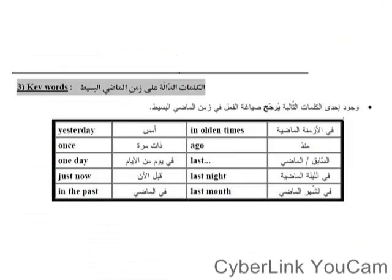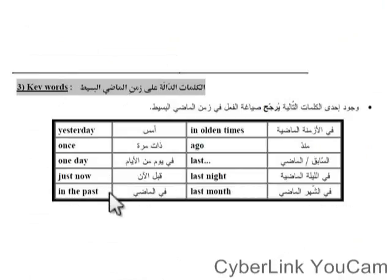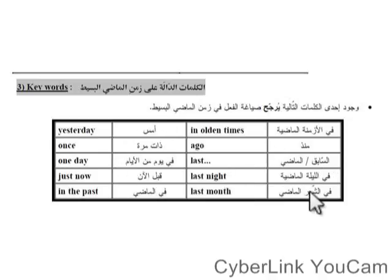عندنا حاجة اسمها الـ keywords — الكلمات اللي هتدل على الزمن وأعرف منها الزمن. لما يجيلي في الجملة: yesterday, once, one day, just now, in the past, in olden times, ago, last, last night, last month — لو لاقيت أي كلمة من دول في الجملة، طول الوقت ده past simple tense — زمن الماضي البسيط.